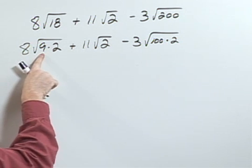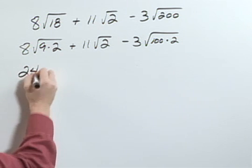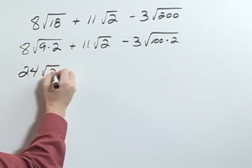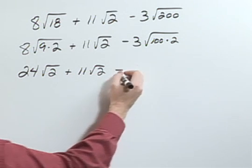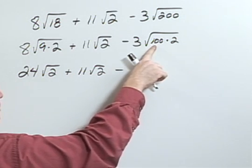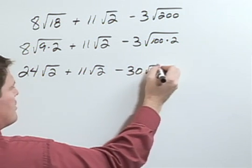The square root of 9 is 3, so that gets to come out. 3 times 8 would be 24, so this becomes 24 square root of 2 plus 11 square root of 2 minus the square root of 100 is 10. So 10 times 3 would be 30 square root of 2.